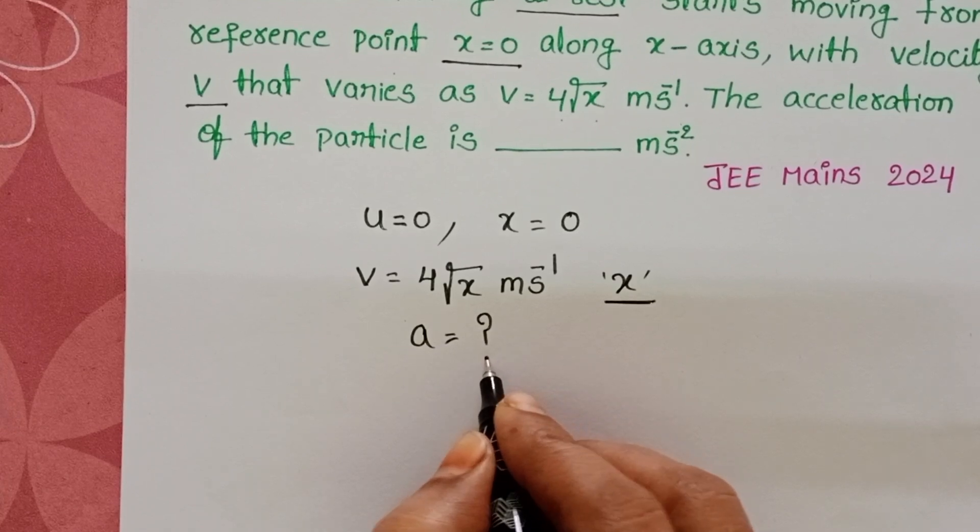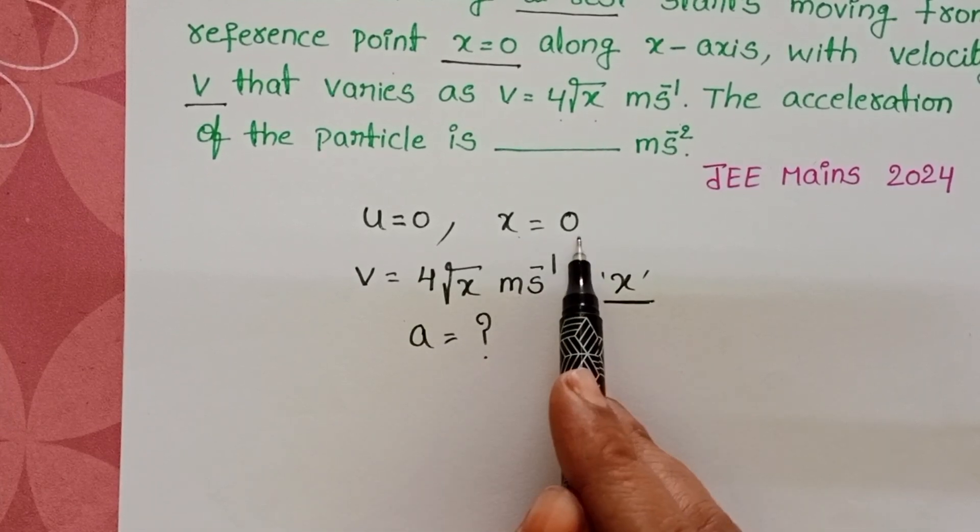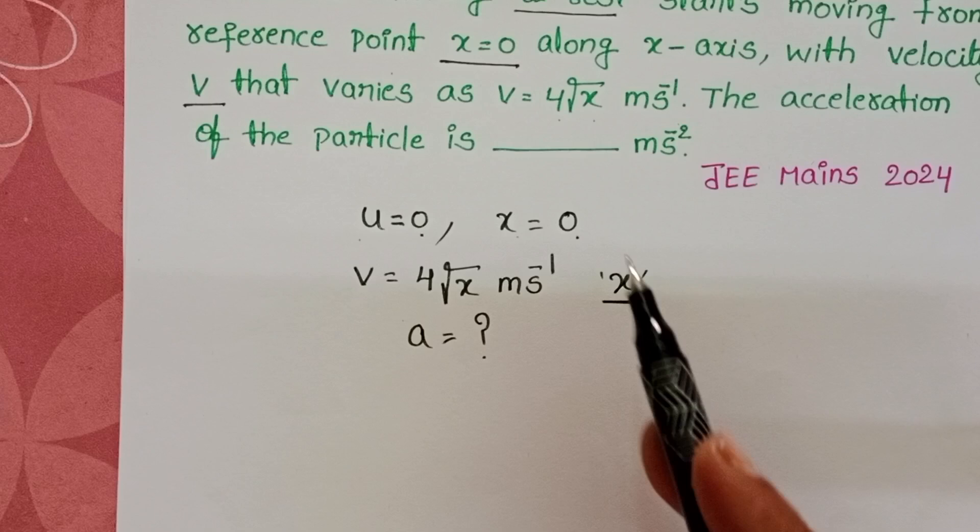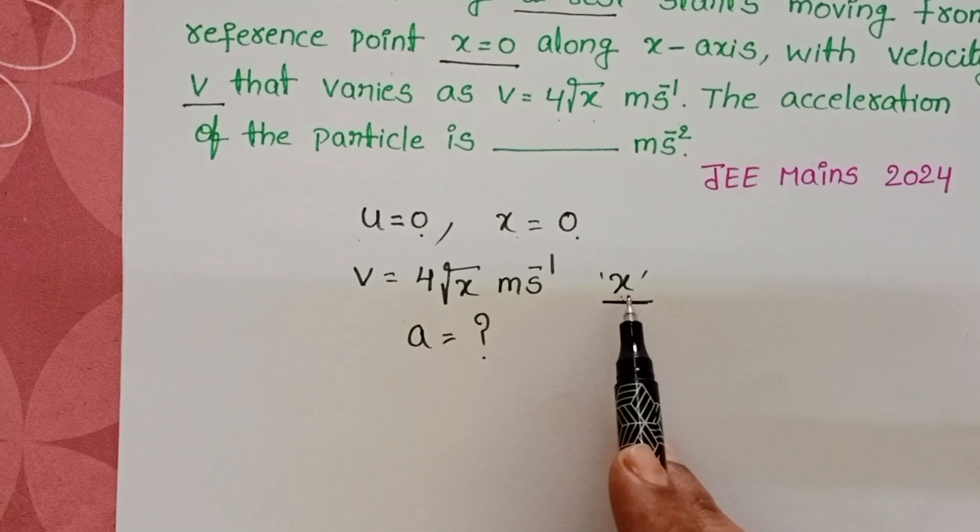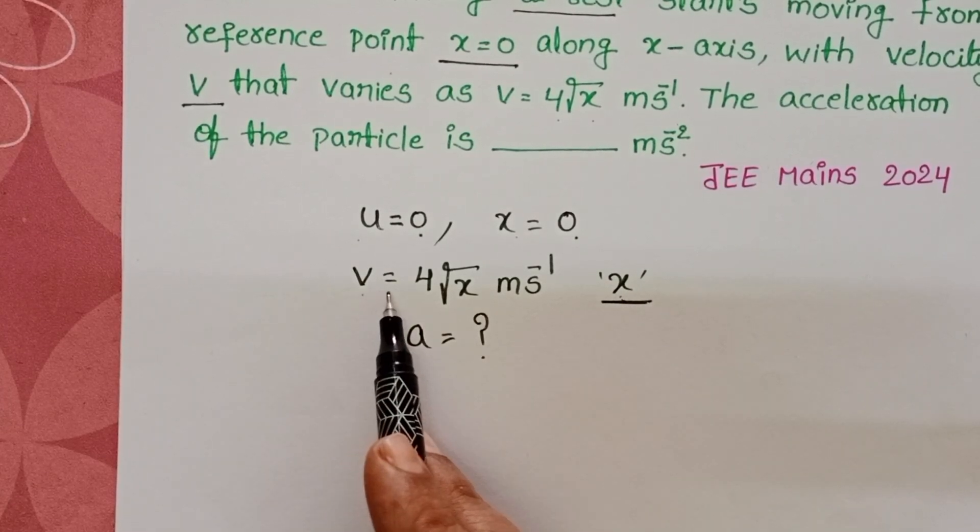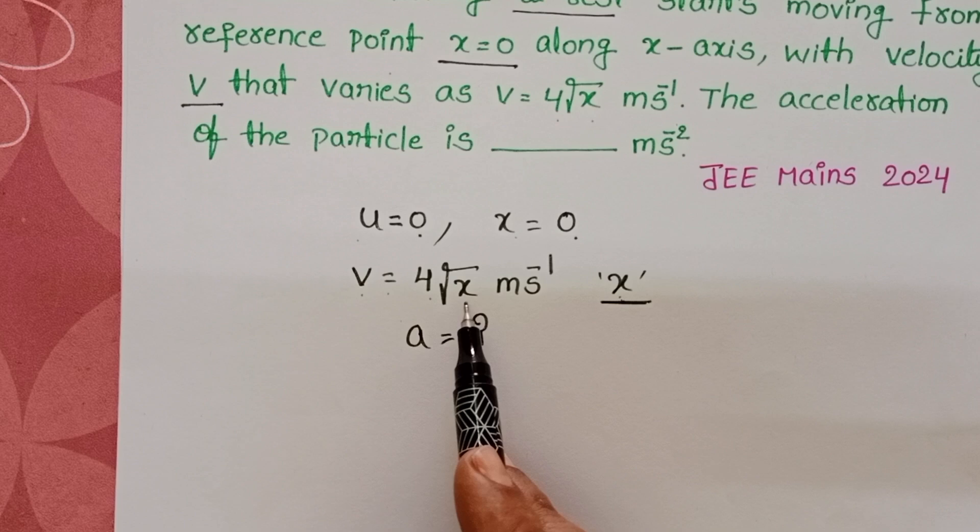When particle is at rest position x equals 0 and initial velocity is 0. And particle travels a distance x its velocity v equals 4 into square root of x.